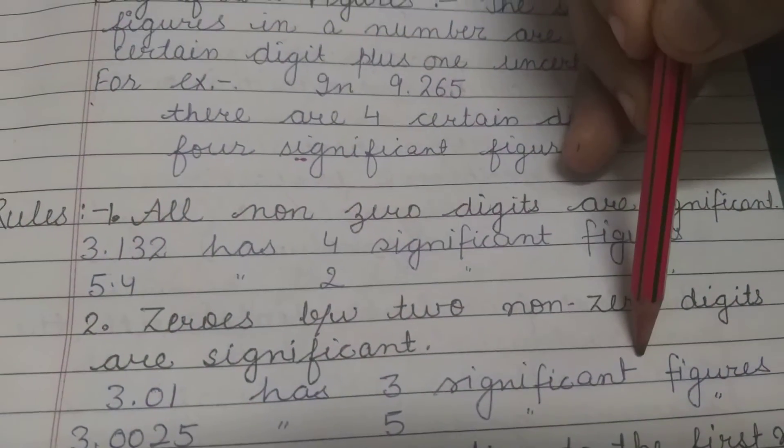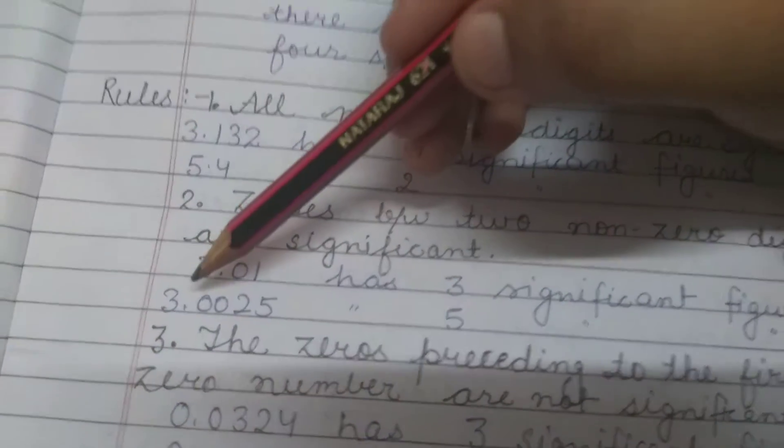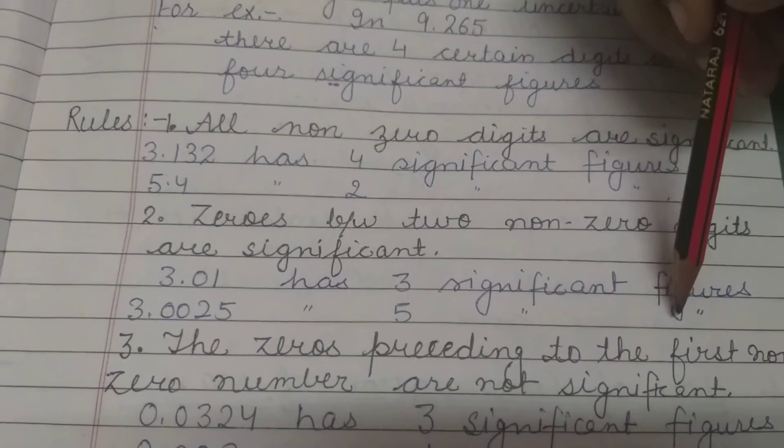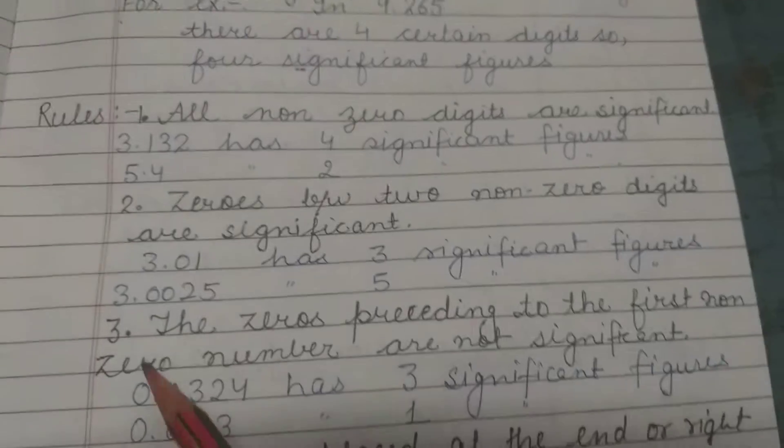Next example is 3.0025, which has five significant figures.